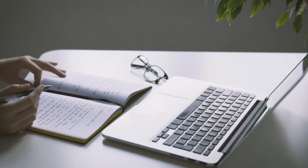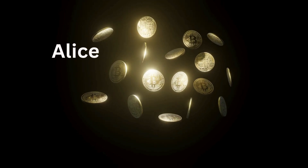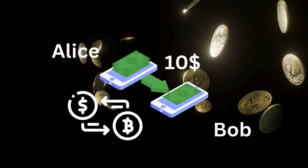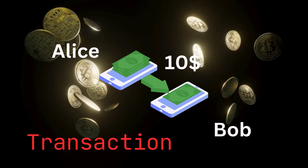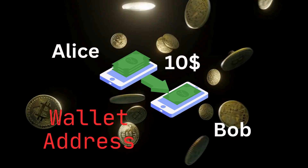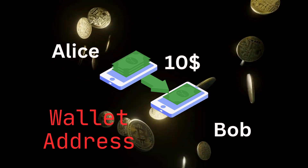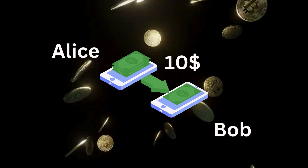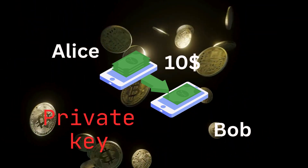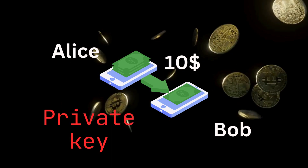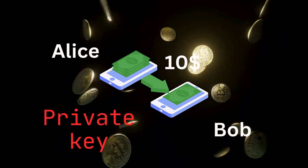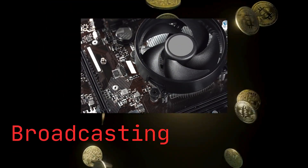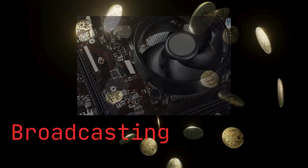Step-by-step example: let's say Alice wants to send $10 to Bob using Bitcoin. Step 1 — Creating a transaction: Alice enters Bob's wallet address (like an email for Bitcoin) and the amount, $10. Alice digitally signs the transaction with her private key, like a secret password. The transaction is now like a sealed envelope ready to be sent. Step 2 — Broadcasting to the network: the transaction is sent to the blockchain network — thousands of computers worldwide.